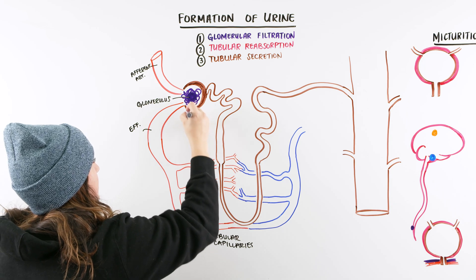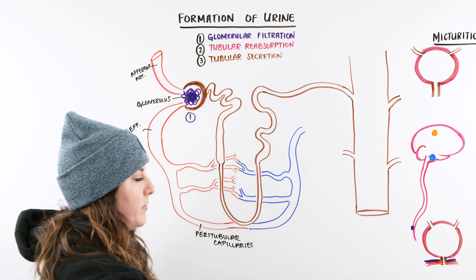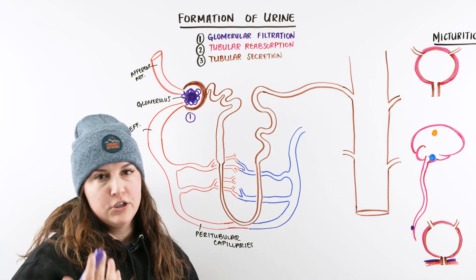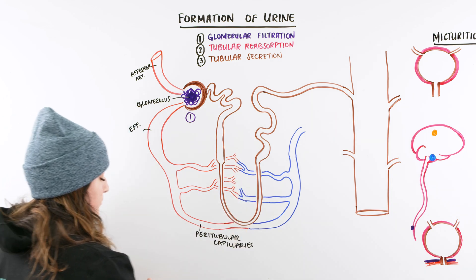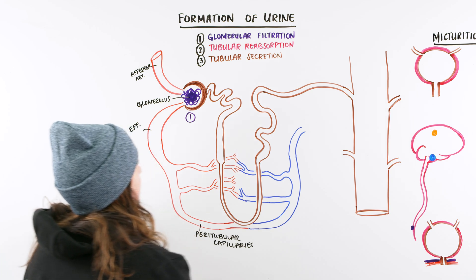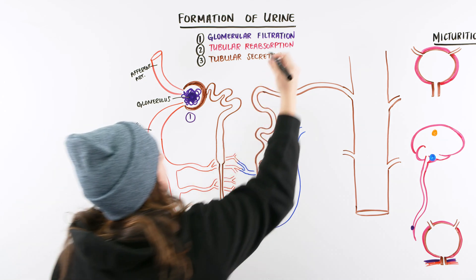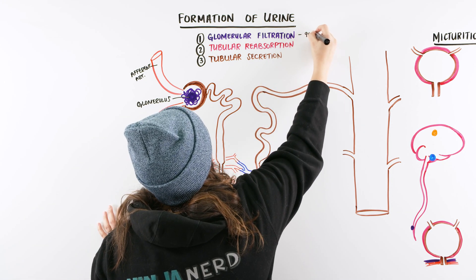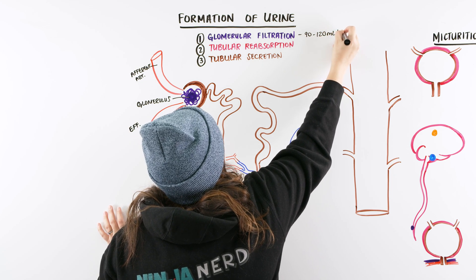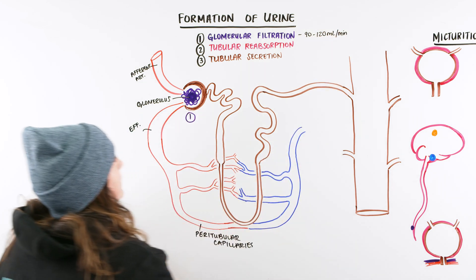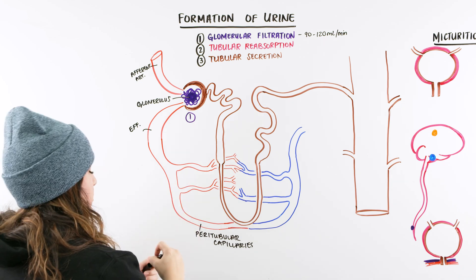So glomerular filtration is essentially occurring here. And when we talk about glomerular filtration, we also want to think GFR. What is our glomerular filtration rate? Do you remember what that range is that we need to know for the NCLEX? It's about 90 to 120 milliliters per minute. So every minute we have that occurrence.